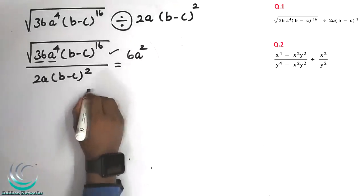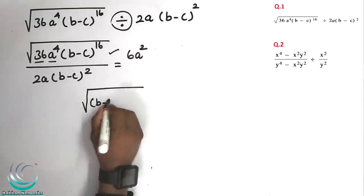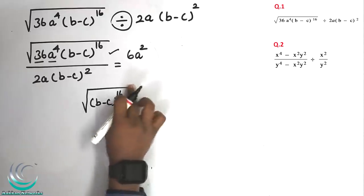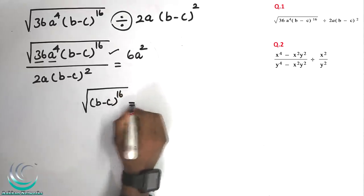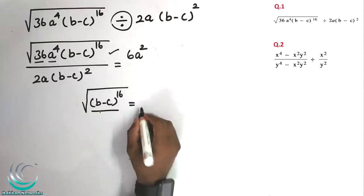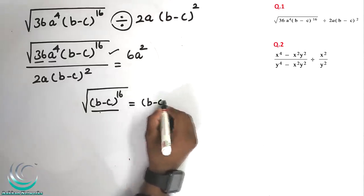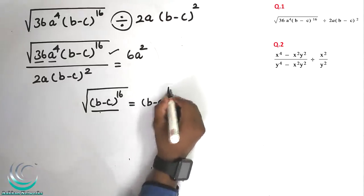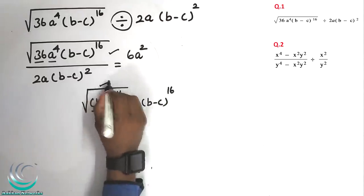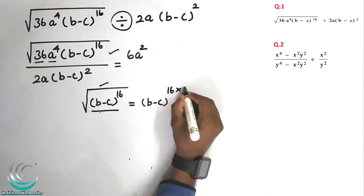Square root of (b-c) power 16: we multiply the power by the square root, that is, multiply by power 1 by 2.